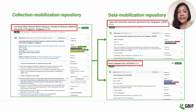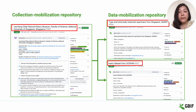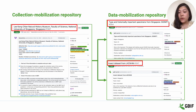In this slide, I wanted to show an example of a GRSciColl institution from Singapore called the Lee Kong Chian Natural History Museum, which I am assigned to in the collection mobilization repository. After updating the data about the institution, collections, and contacts based on information available on their web page, I noted that the institution is already a registered publisher in GBIF and they have also published some of their collection data through GBIF.